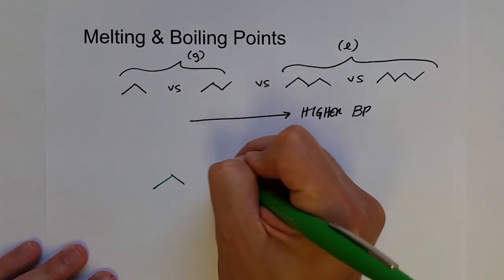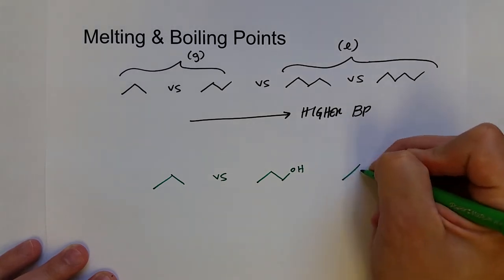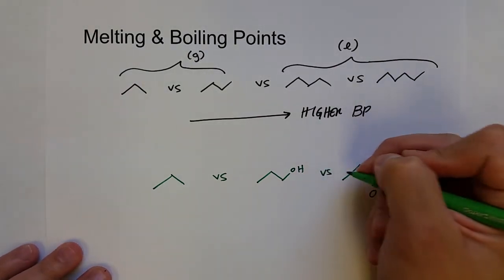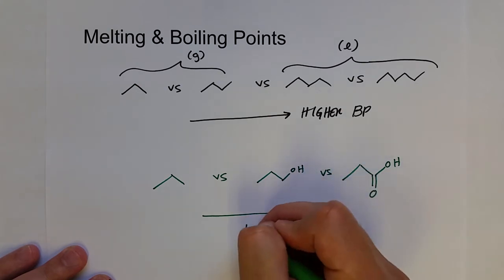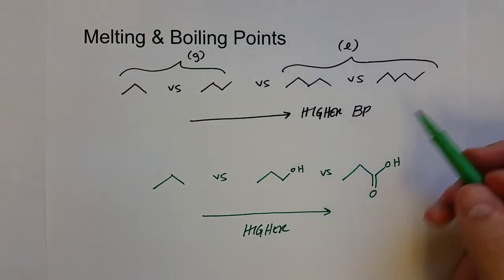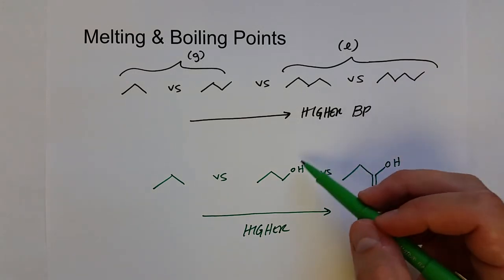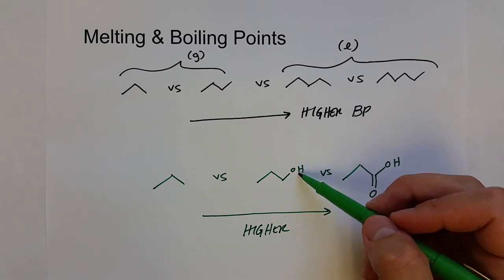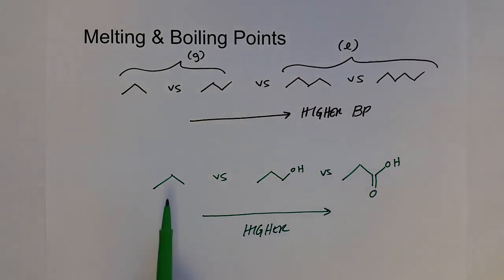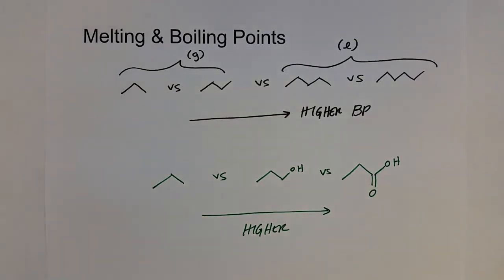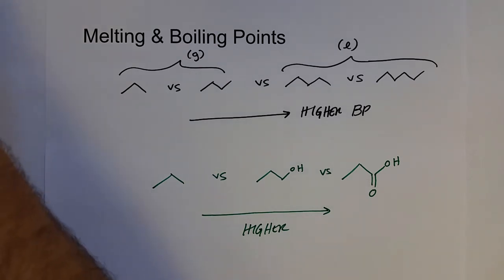Consider propane versus propanol versus propanoic acid. The boiling point increases — not just because the molecule is getting slightly bigger with the additional oxygen, but more importantly because the polarity is increasing. The addition of a hydroxyl group changes it from a nonpolar molecule to a polar molecule, which has stronger intermolecular forces. The additional oxygen in propanoic acid increases the polarity even further, which increases intermolecular forces and results in a higher boiling point.